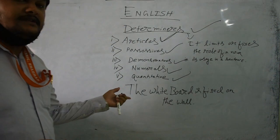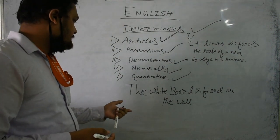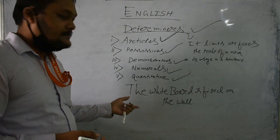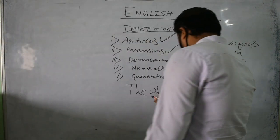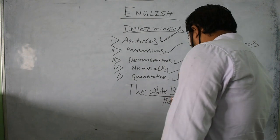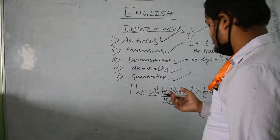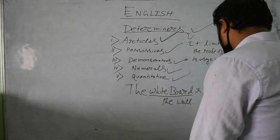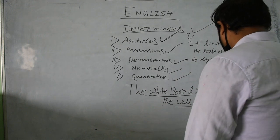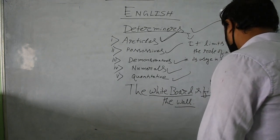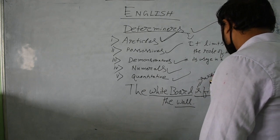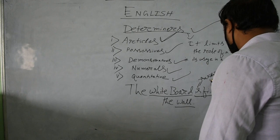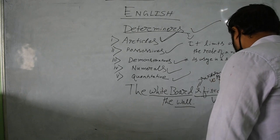In this simple sentence you can see the usage of all the things required in a sentence. 'White boat' in this case would be the subject. 'Is fixed on the wall' — 'fixed' is the main verb, 'is' is the auxiliary verb.